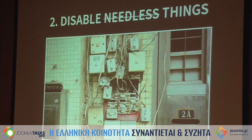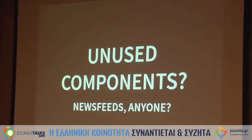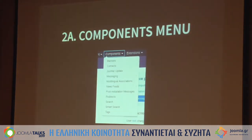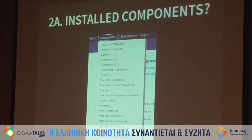Disable needless things in your Joomla site. About components — if you install the Joomla core, who is using the Newsfeeds component? If you click on Components, it's still there. So all the components that you don't use, don't uninstall them — disable them. If you have a lot of third-party extensions installed, your website might be cluttered. Things you really don't need and that aren't Joomla core — remove them, because you need to update them otherwise.